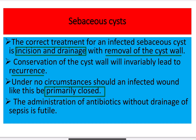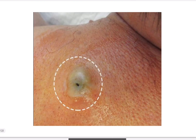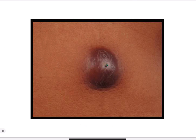We incise and drain, then wait for secondary closure with regular dressing. Administration of antibiotics without drainage of the sepsis is futile — antibiotic administration without incision and drainage will completely fail. Here again we can see another infected sebaceous cyst, showing the punctum and the whitish area indicating infection, and another picture showing the punctum, the sebaceous gland, and thinning of the overlying skin indicating infection.